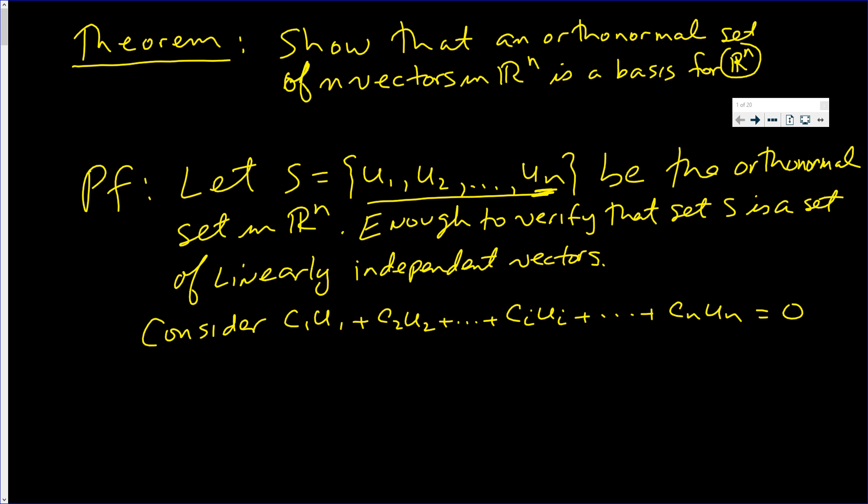I'm going to dot both sides of this equation with u sub i. So u sub i dotted with c1u1 plus c2u2, all the way up to ciui, all the way up to cnun. This is equal to ui dot zero.